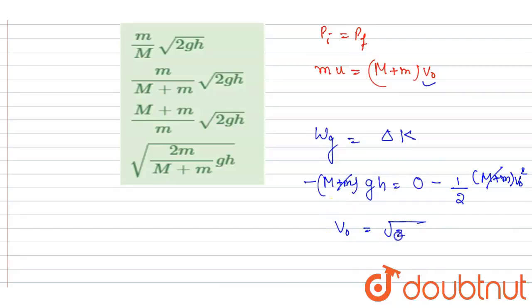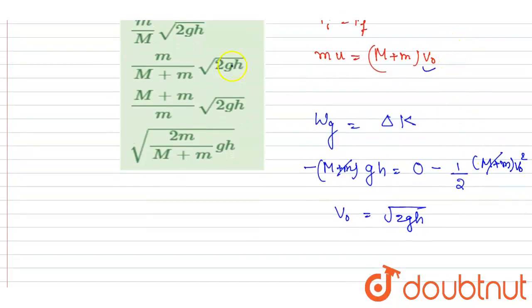If you put the value of v₀ in this expression, I write u equals (M + m)/m times v₀. So v₀ value is root 2gh. Now if I put the value